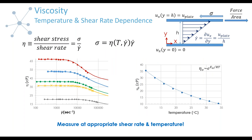Viscosity is basically a stress response to applied deformation, this applied deformation being characterized by shear rate, which is essentially a velocity gradient perpendicular to the flow direction. Viscosity can depend on shear rate and will depend on temperature. When you're prepping to collect data, you want to plan accordingly and try to measure at the appropriate shear rate and appropriate temperature for your application.